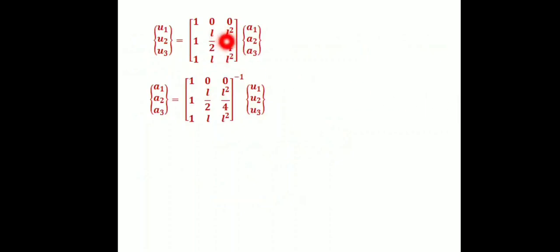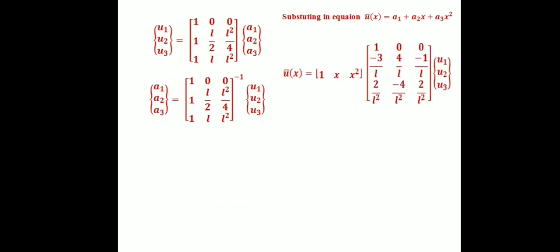We solve for [a1, a2, a3] using the matrix inverse. Substituting back into the displacement equation and multiplying through, we obtain three shape functions N1, N2, N3. The final displacement function is: u = N1·u1 + N2·u2 + N3·u3.